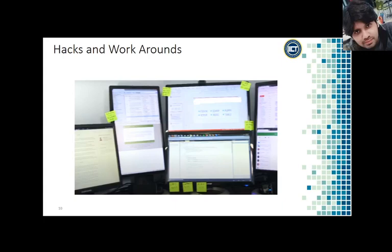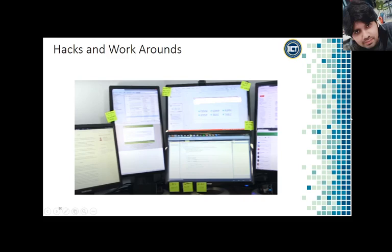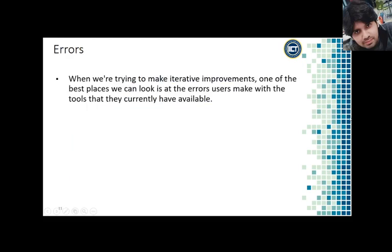Let's continue where we left off. Errors — when we are trying to make iterative improvements, one of the best places we can look is at the errors users make with the tools they currently have available. We can fix those errors, but we can also use those errors to understand a bit more about the user's mental model.